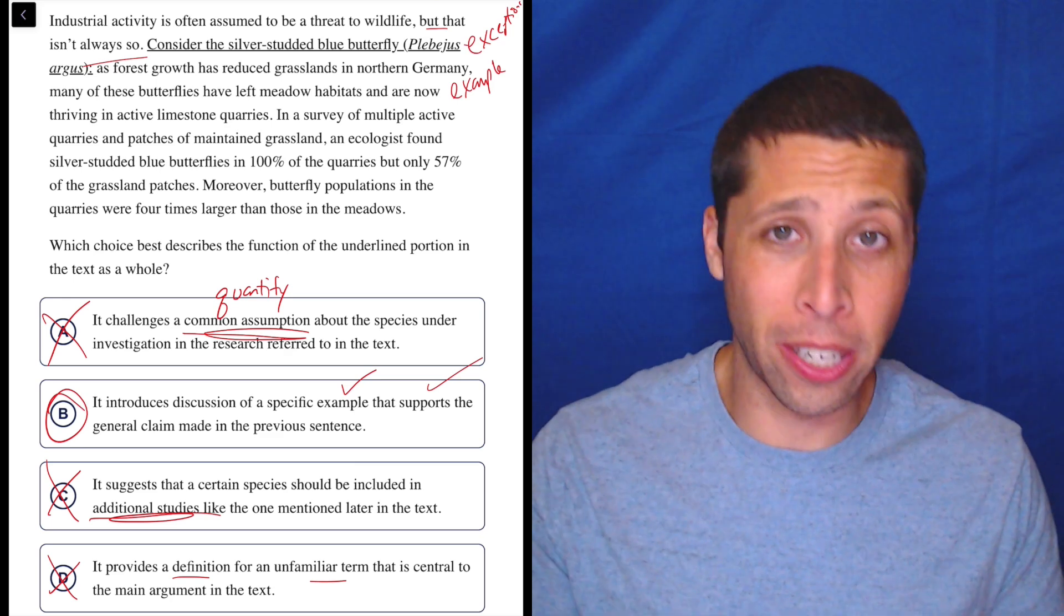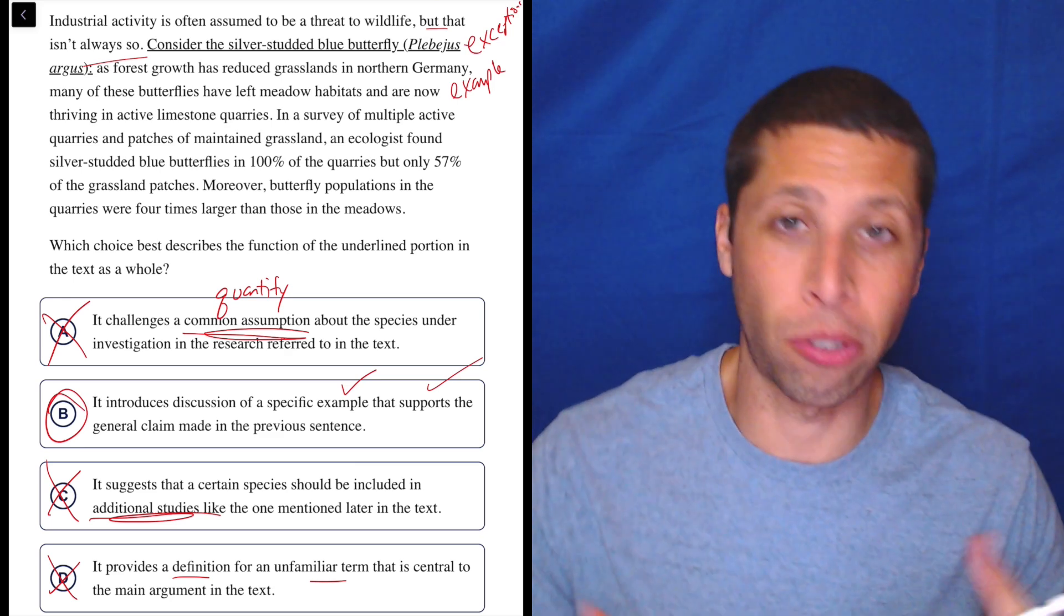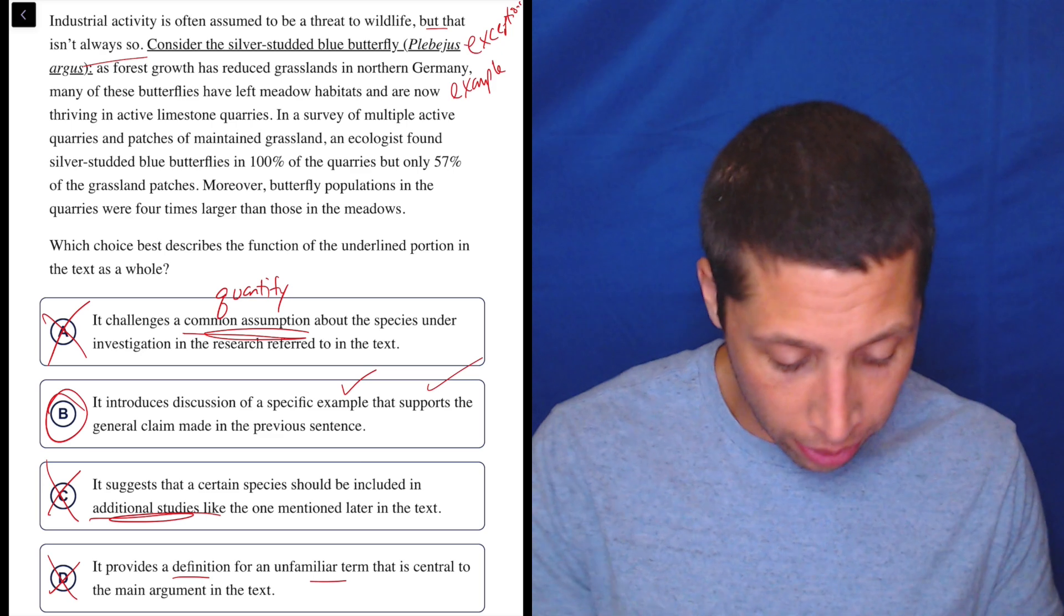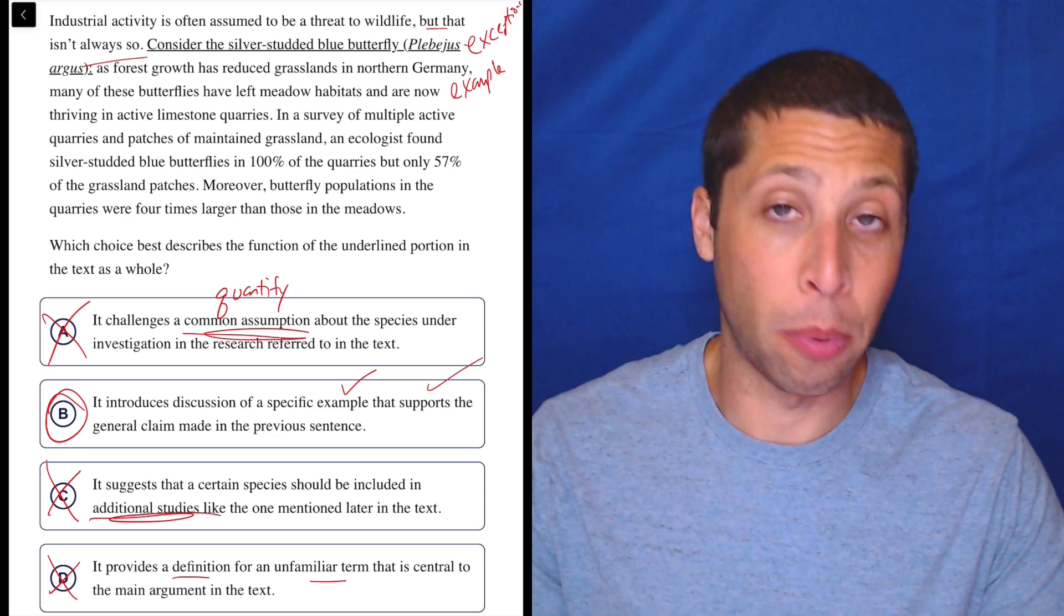So, there you go. I thought it was an example. There you go. It's an exception to the general rule that industrialization is bad. That part kind of comes up later in that choice, but, you know, example works.